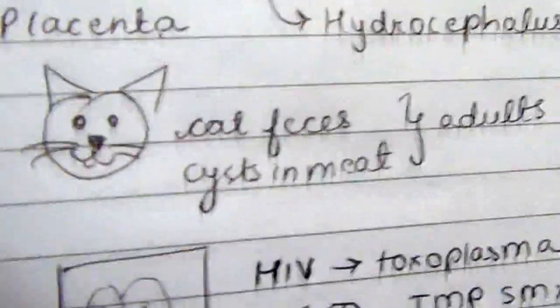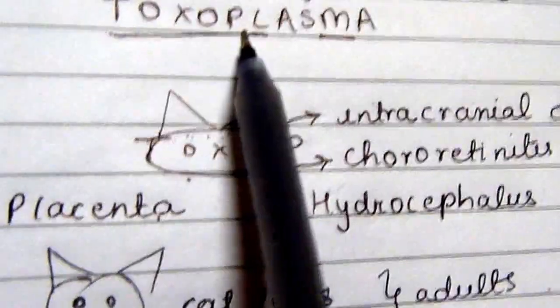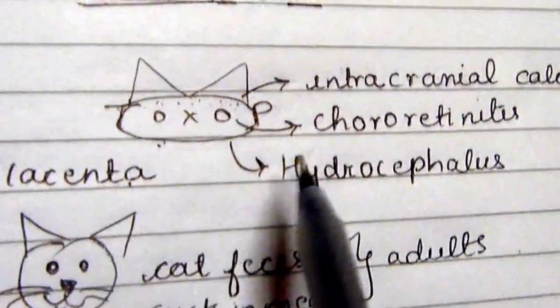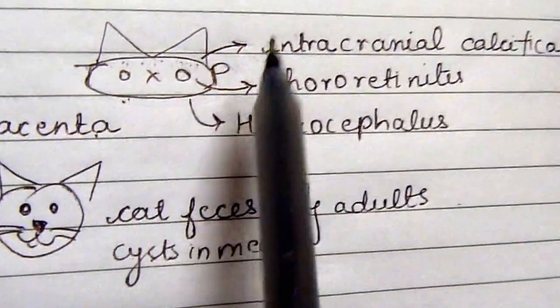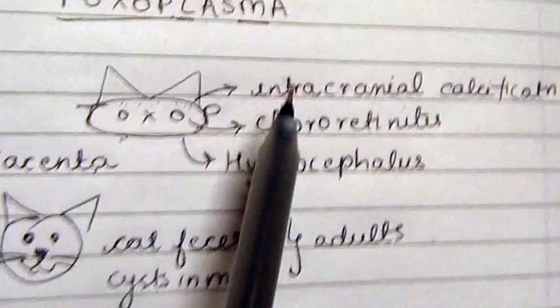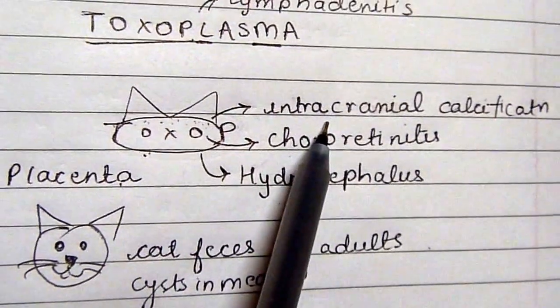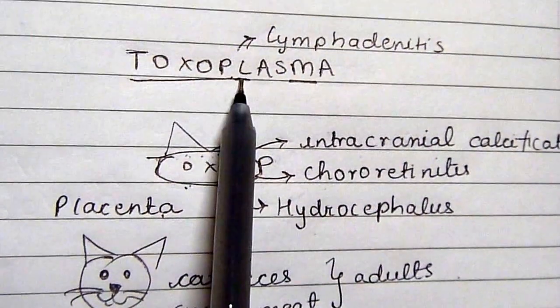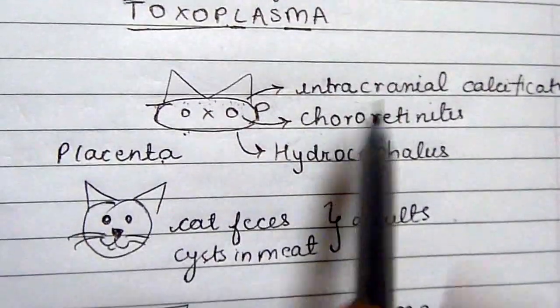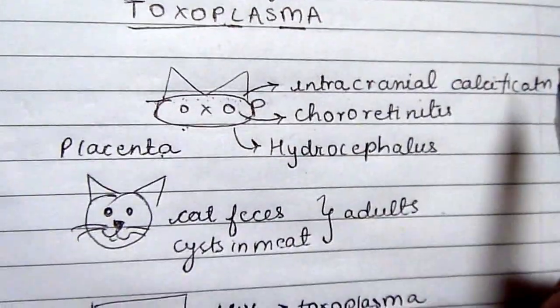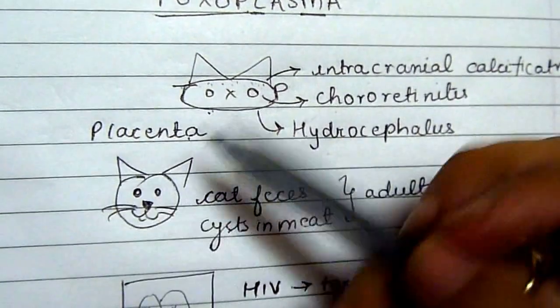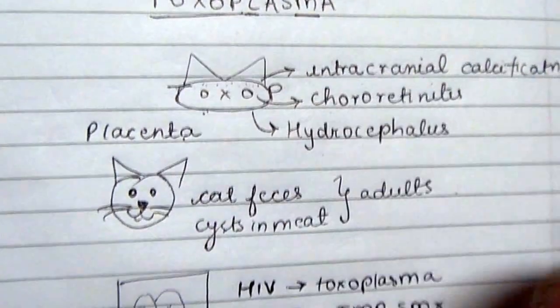So let's revise. We drew the toxoplasma for remembering the classic triad of hydrocephalus, chorioretinitis, and intracranial calcification in children. In pregnant females, lymphadenitis may be the only symptom.